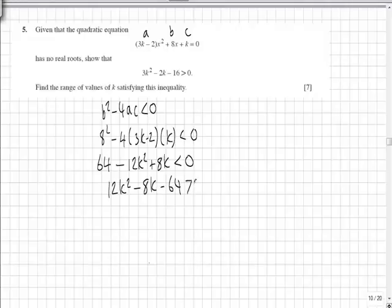Not quite what we're looking for, but all the coefficients are factors of 4. So we divide by 4 giving us 3k squared minus 2k minus 16 is greater than 0.